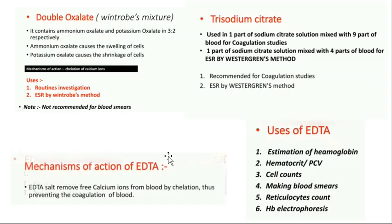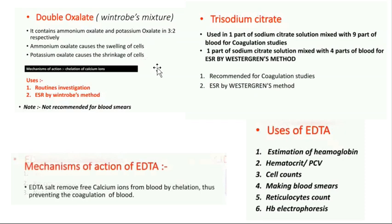Regarding anticoagulants: citrate solution (liquid) is used for coagulation studies and in the Westergren method. Oxalate powder is used in the Wintrobe method because the small test tube cannot accommodate extra liquid. A combination of ammonium oxalate and potassium oxalate is used because ammonium oxalate causes RBCs to swell while potassium oxalate causes shrinkage — together, osmolarity and RBC shape are maintained. EDTA is used for blood smears and most hematology investigations because it preserves WBC morphology.